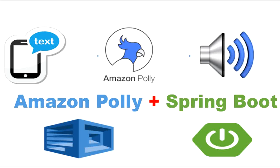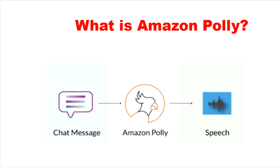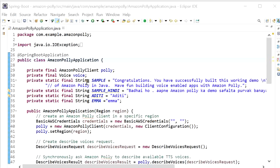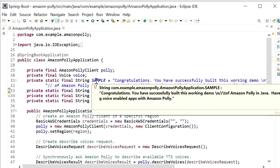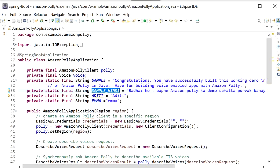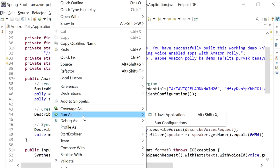Hello, welcome to this channel Gain Java Knowledge. Today in this video we will discuss Amazon Polly and how we can utilize this service in Java. Amazon Polly is a service that is used to convert text into lifelike speech, allowing you to create applications that can talk with a natural voice. We will use two samples: one in English and one in Hindi. The input will be text and the output will be audio sound, as a Java application.